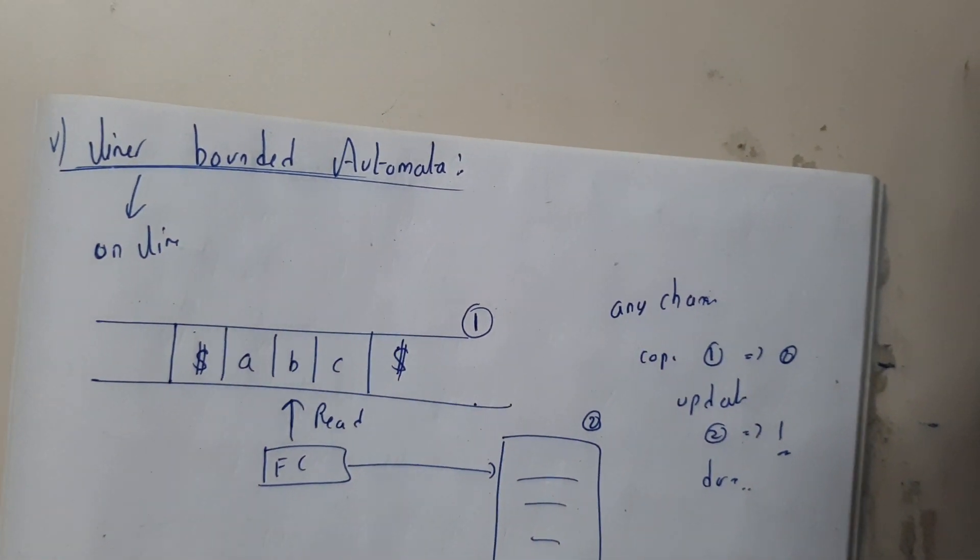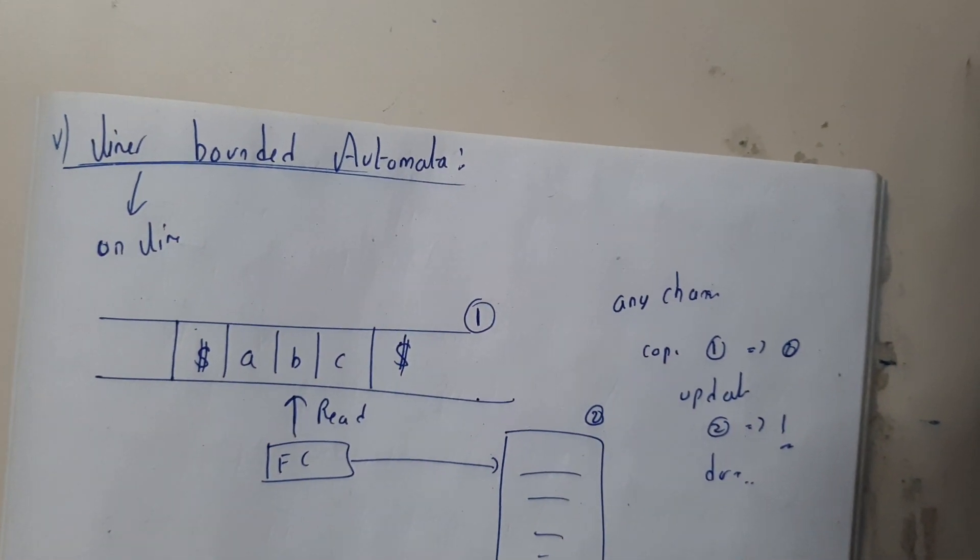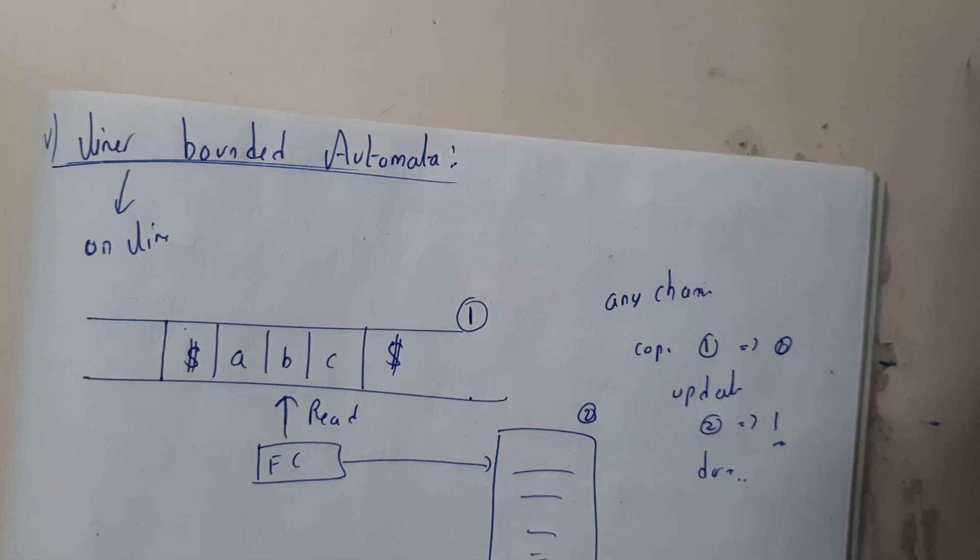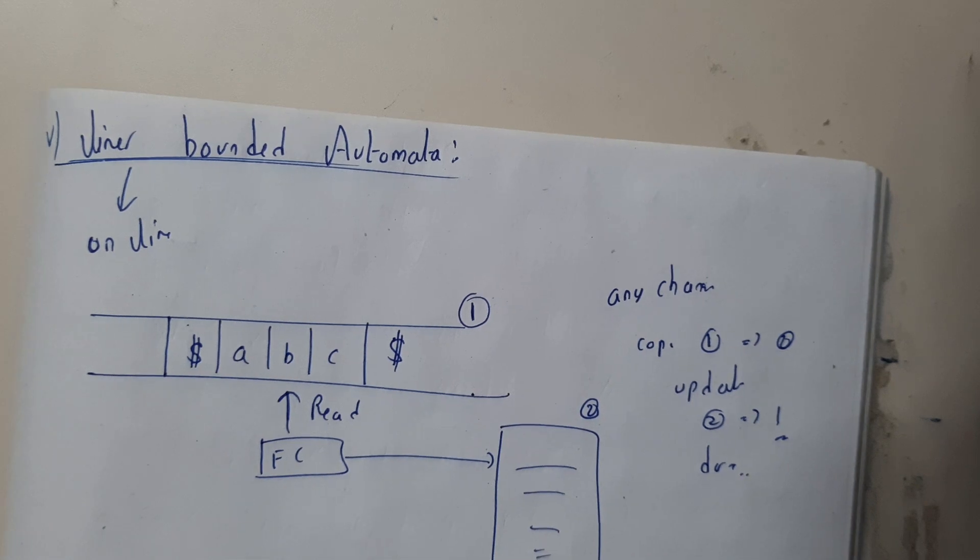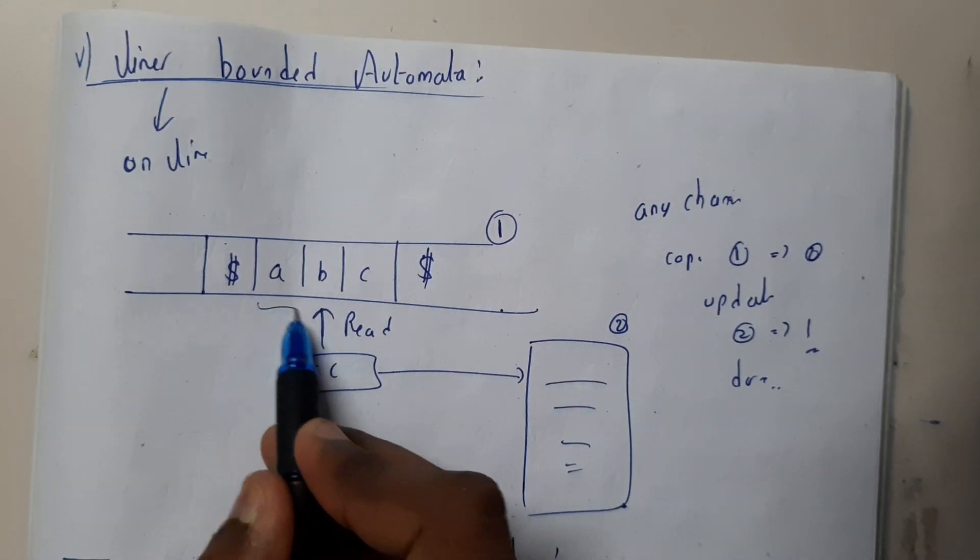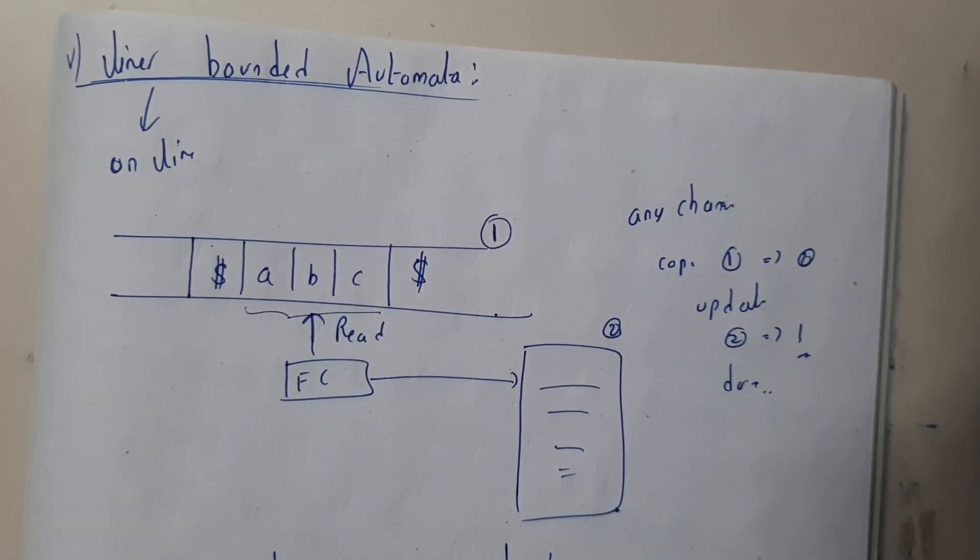The last type is linear bounded automata, which we will be discussing in future. Linear bounded automata means it will have a particular fixed length. Here the length is three, so it can be stored in that.